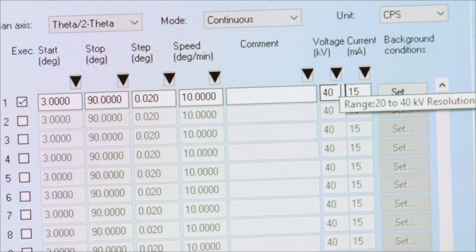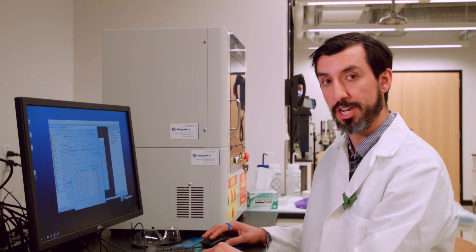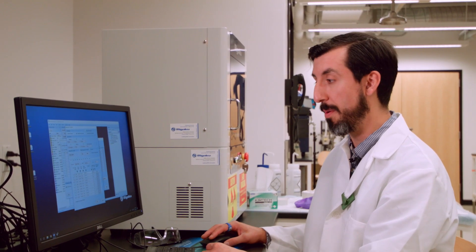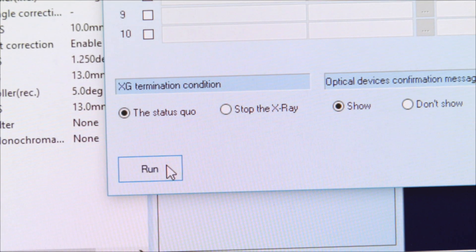The last two boxes are the kilovolts and the milliamps. These parameters shouldn't be changed as we want to run the tube at its maximum power. Once you're satisfied with the parameters you've input, click OK, then run.